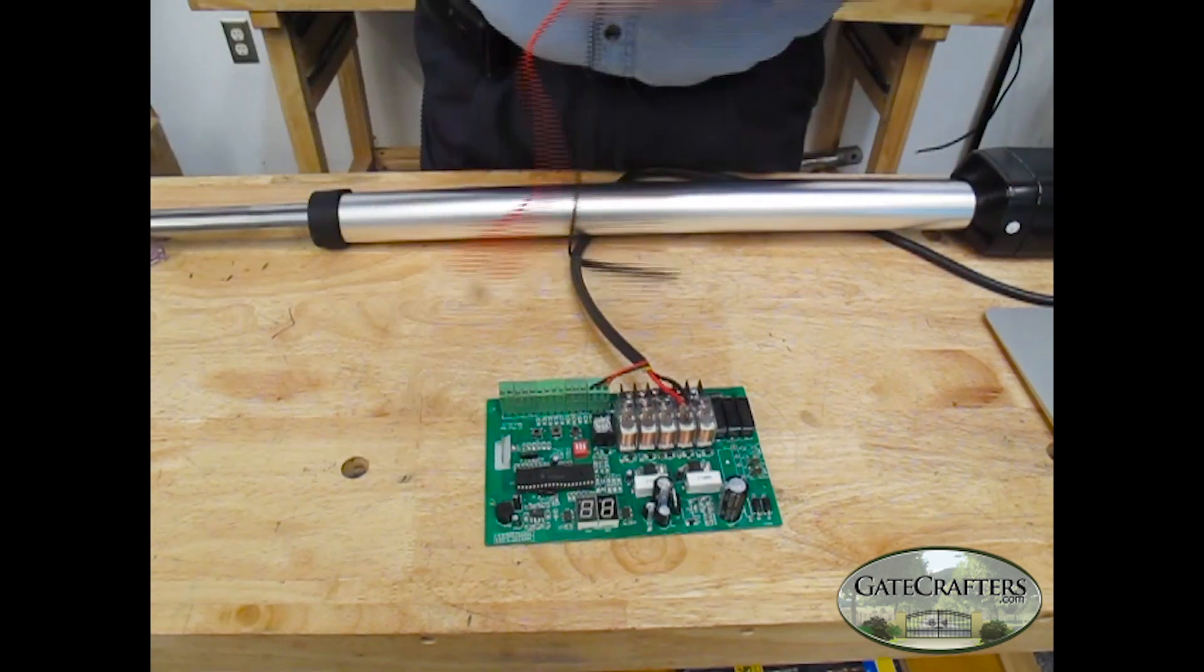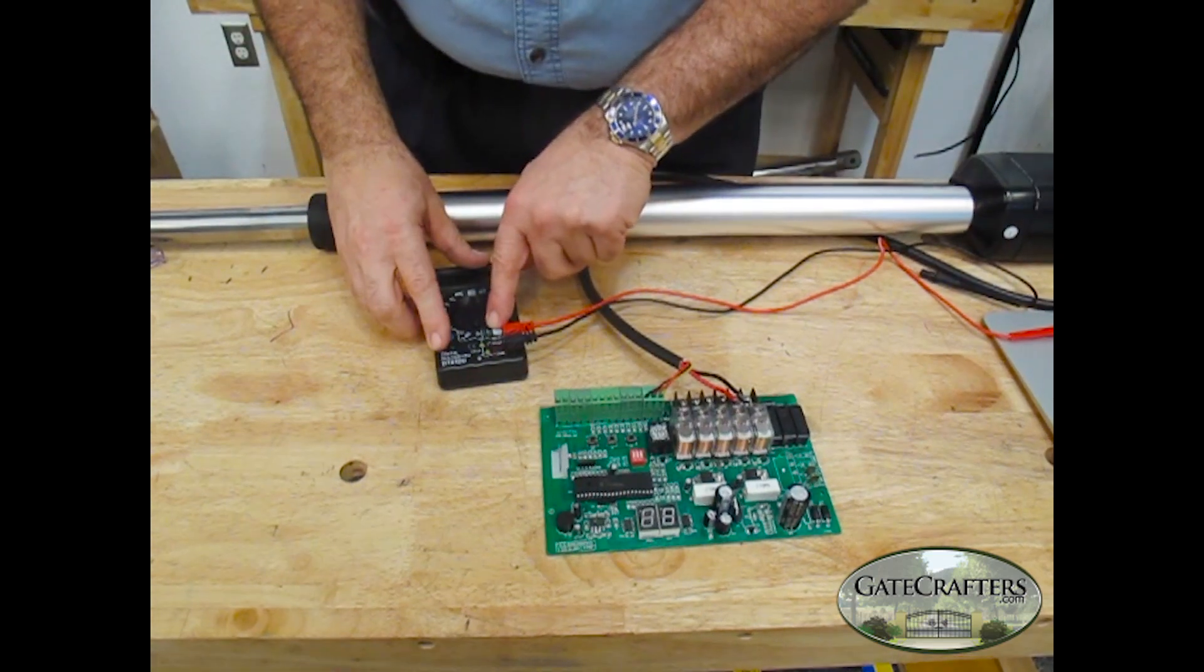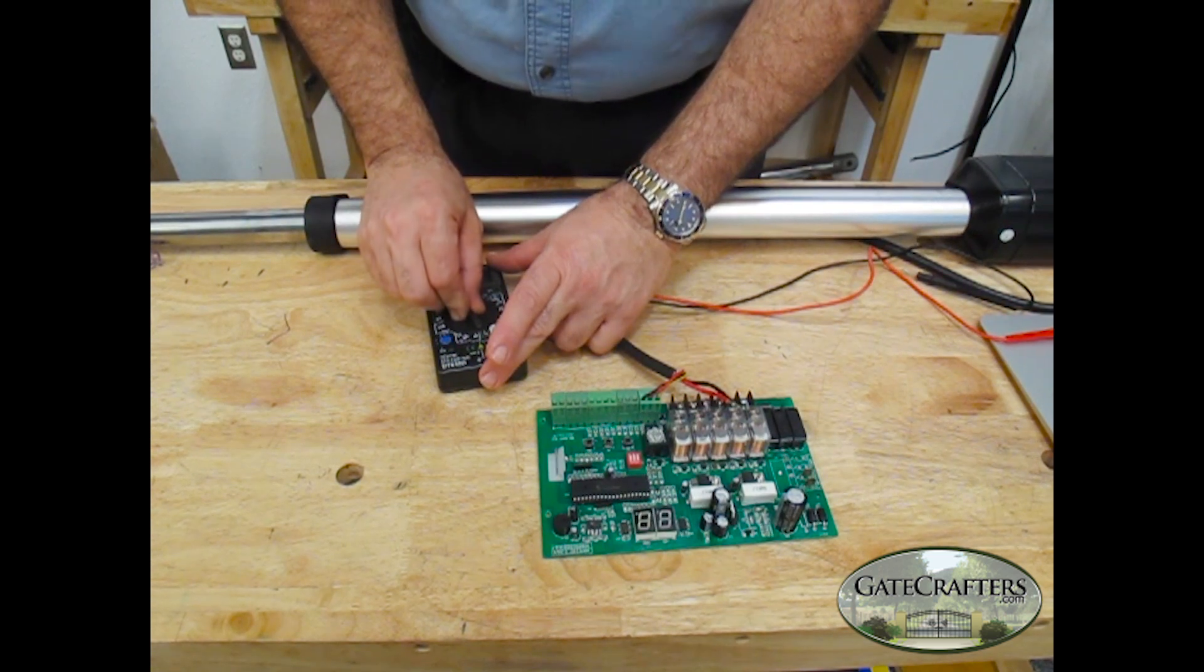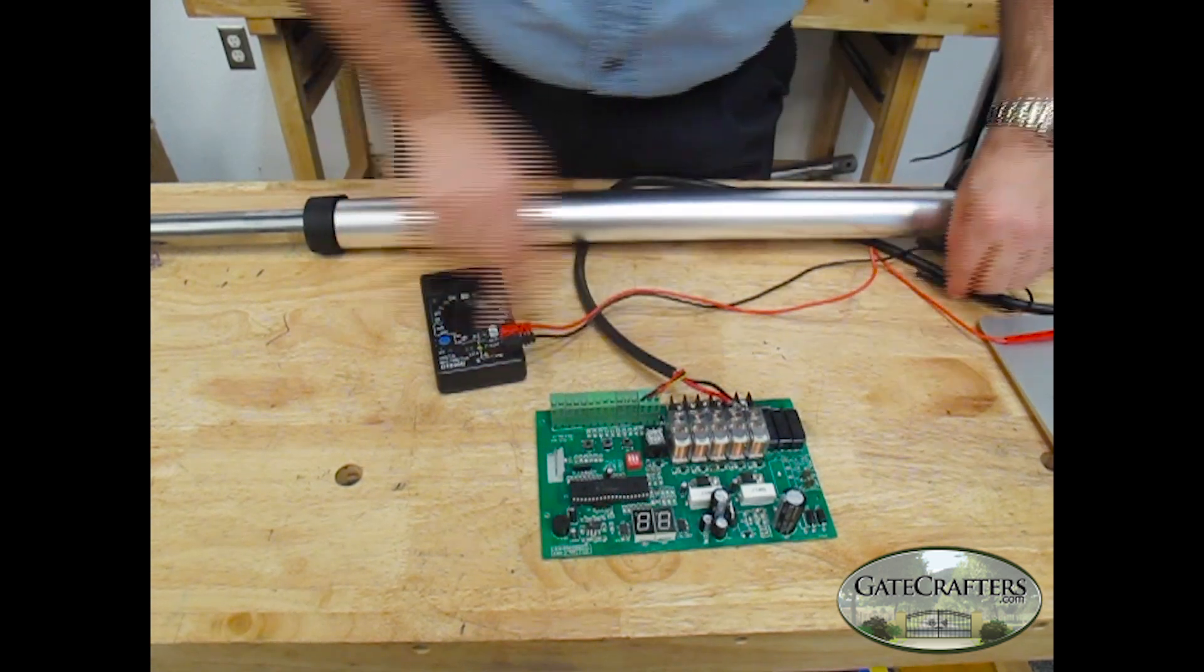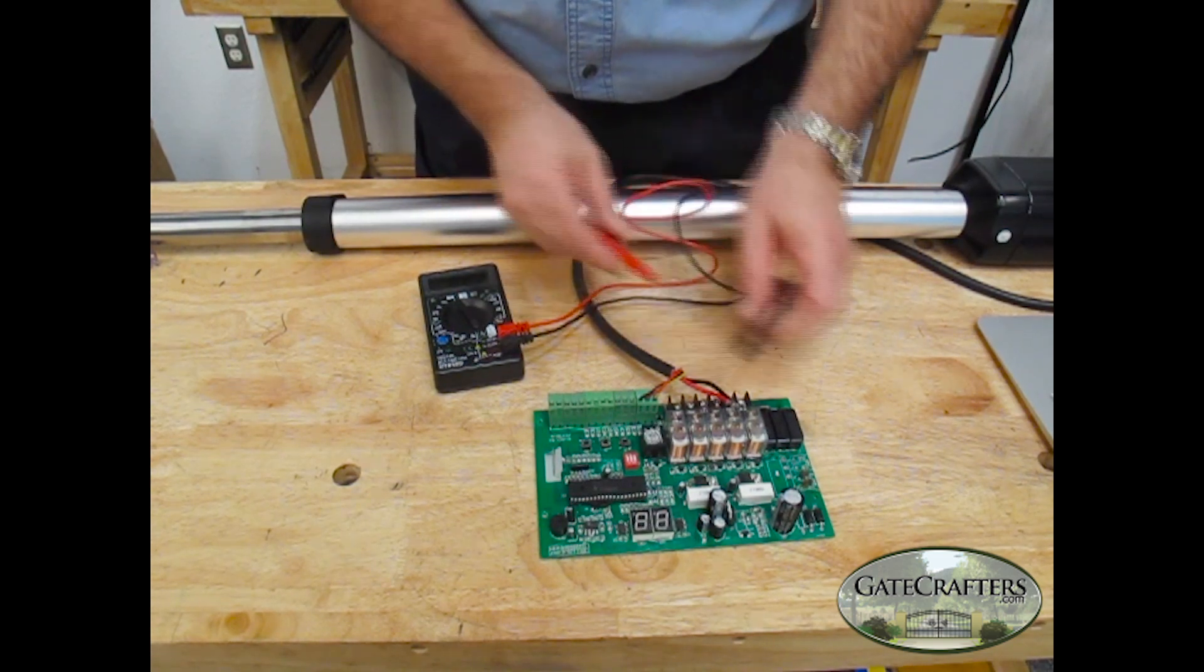Next, we're going to make sure we have a correct voltmeter. If you look for something that looks like making a sound, that's the continuity checker. It's usually next to the Omega symbol. To make sure, touch the two probes together and listen for a sound.